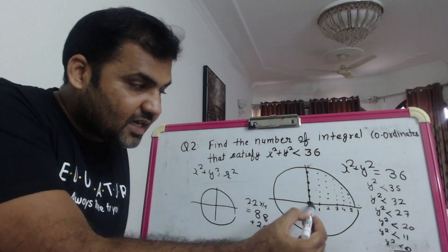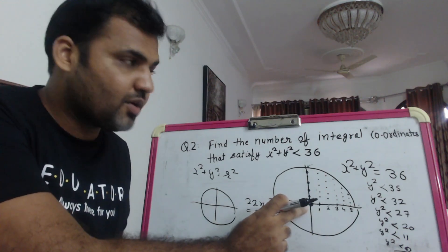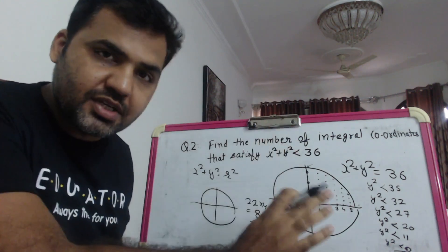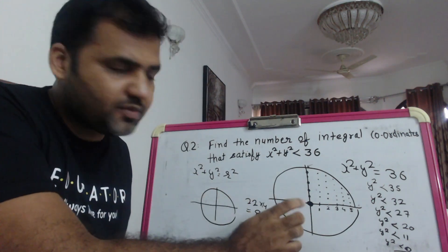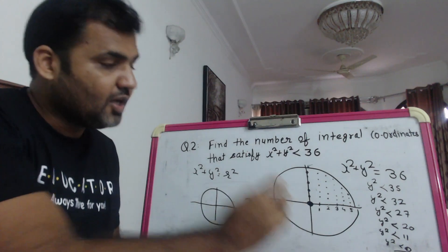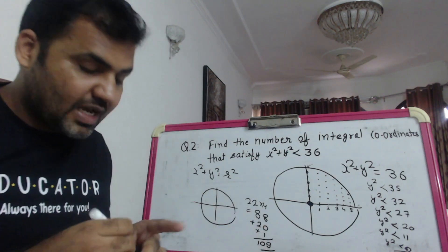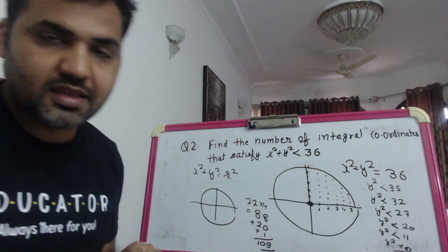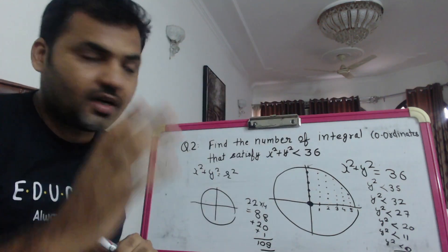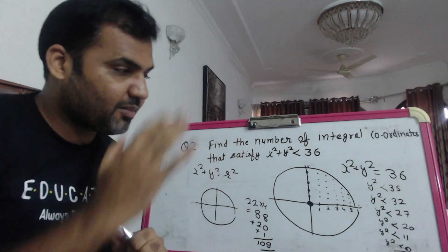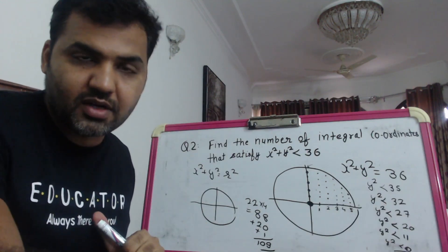So the total number of integral coordinates that satisfy x² + y² < 36 will be 88 + 20 + 1 = 109. This is the right answer. You should have a basic idea of how to draw the graph to solve this quite easily. Thank you so much for watching the video - see you in the next one! Please subscribe to the channel for regular notifications and updates.